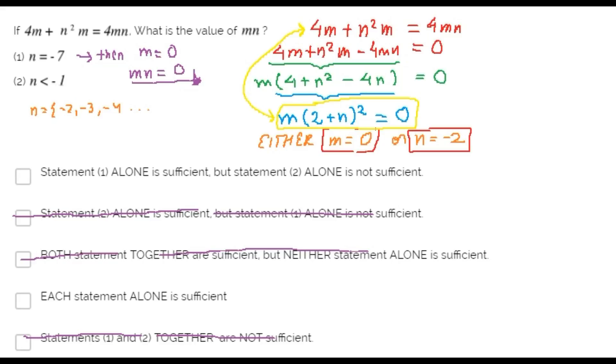If n is negative 2, then m times n is m times negative 2. And we can't find the value of this because we don't know the value of m.